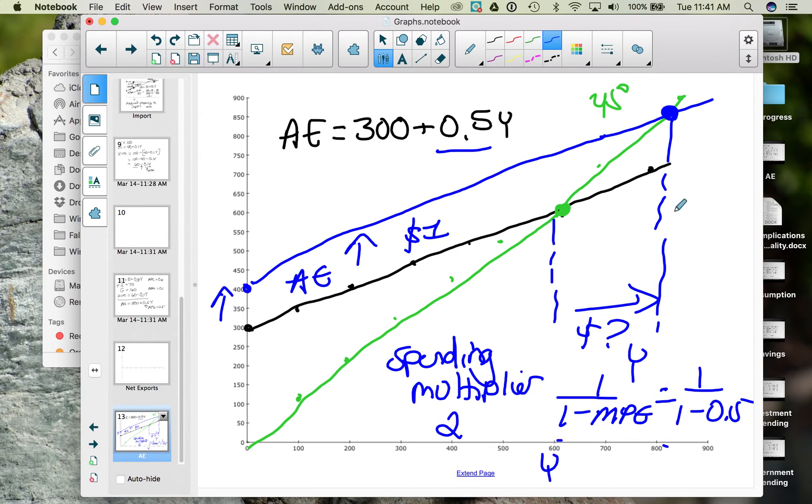Why does this matter? Well, if we increase autonomous aggregate expenditures, for example, government spending to stimulate the economy, the government doesn't have to spend $1,000,000 to get the economy to grow $1,000,000. It depends on the spending multiplier.